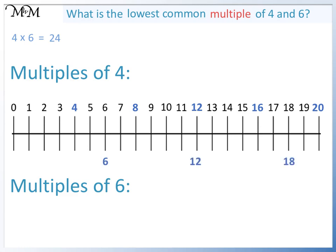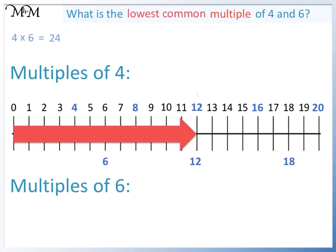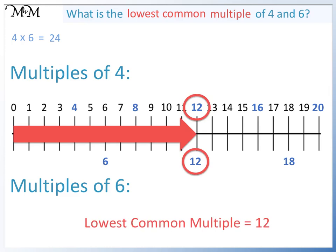We can see that the lowest common number in common to both lists is 12. So the lowest common multiple of 4 and 6 is 12.